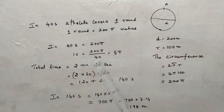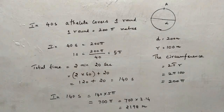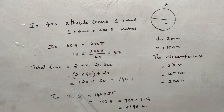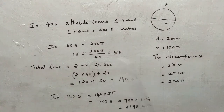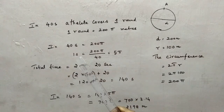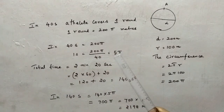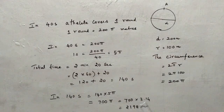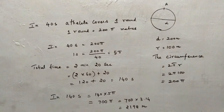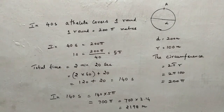Now I want to calculate the distance for the total time of 2 minutes 20 seconds. Converting: 2 minutes = 2 × 60 = 120 seconds, plus 20 seconds = 140 seconds total. Multiplying both sides by 140: distance in 140 seconds = 5π × 140 = 700π. And 700 × 3.14 = 2198 meters. Hence the distance covered in 2 minutes 20 seconds is 2198 meters.